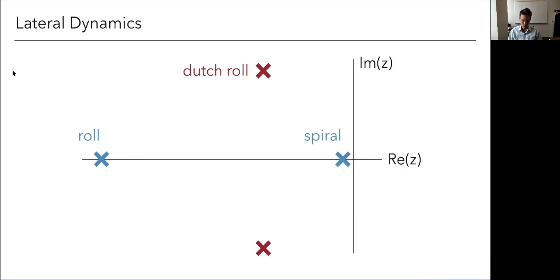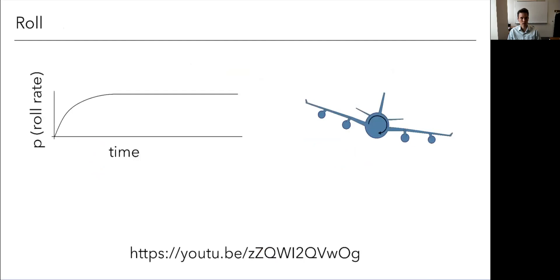Okay. So the roll mode, let's look at that first. This one is really boring. It's highly damped. Generally won't even ever notice it. It just means that your roll rate over time, you know, you initiate a roll, it's gonna converge towards some roll rate, but it's gonna do that really fast. And it's generally, it doesn't oscillate. It's a fully real mode. So not that interesting.